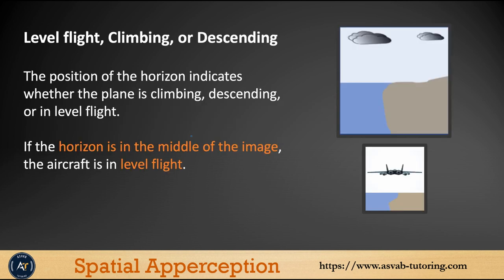Let's learn some terminology — some basic concepts. First, we'll learn level flight, climbing, or descending. The position of the horizon indicates whether the plane is climbing, descending, or in level flight. If the horizon is in the middle of the image, the aircraft is in level flight — that means it's not going up, down, left, or right.